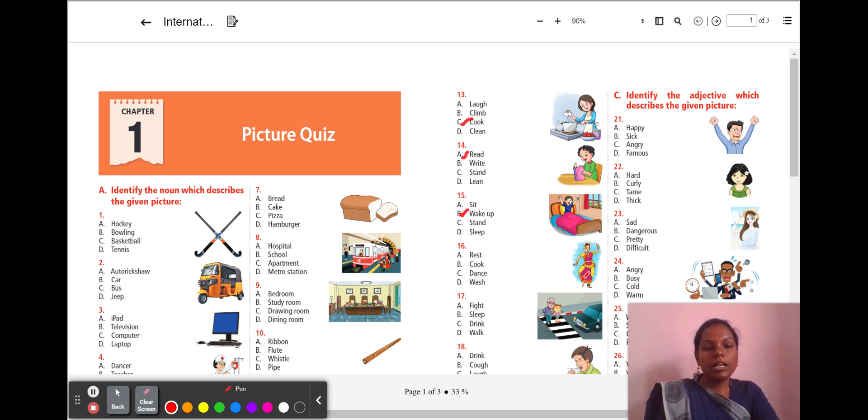Next, 16th question. A girl is here. She is a nice classical dancer. So, what is the action of her? A, rest. B, cook. C, dance. D, wash. So, your answer is C, dance. Dance is the action of the girl. And 17th question. An old man and a child are walking over the zebra crossing. So, what is the action? A, fight. B, sleep. C, drink. D, walk. So, the action is D, walk.